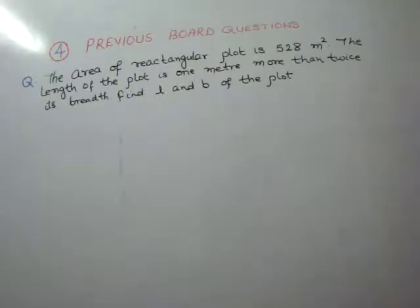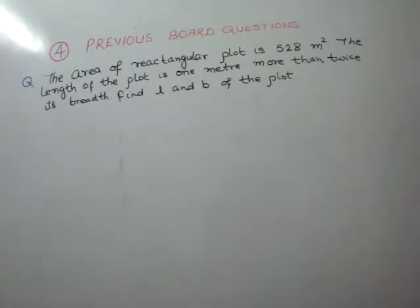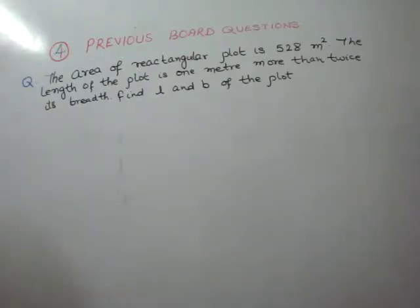Our question is: the area of a rectangular plot is 528 square meters. The length of the plot is 1 meter more than twice its breadth. Find the length and breadth of the plot.